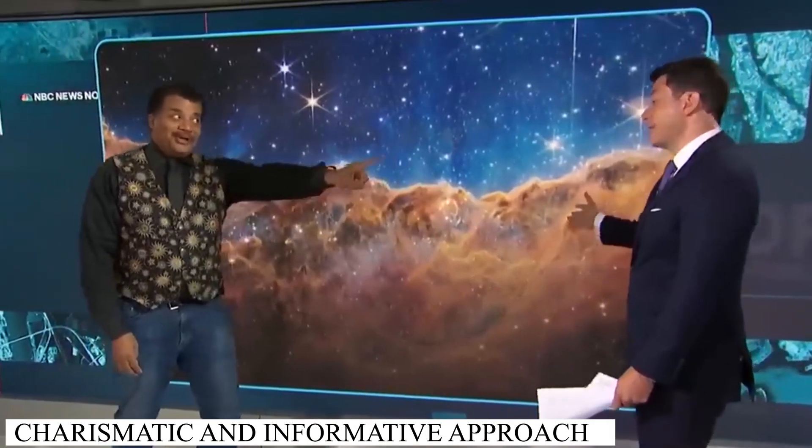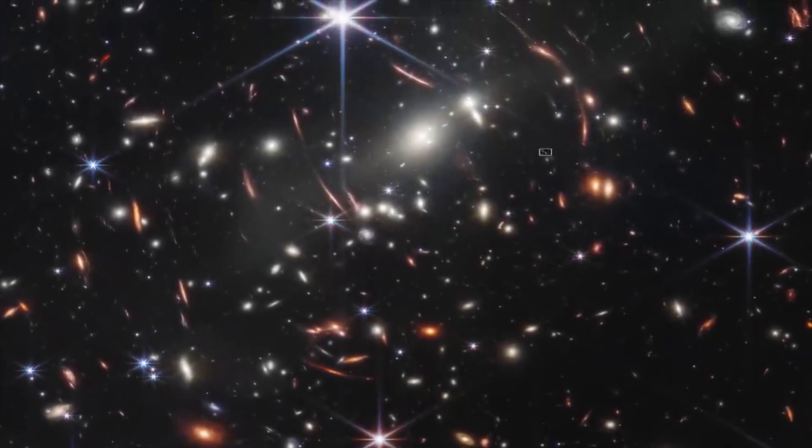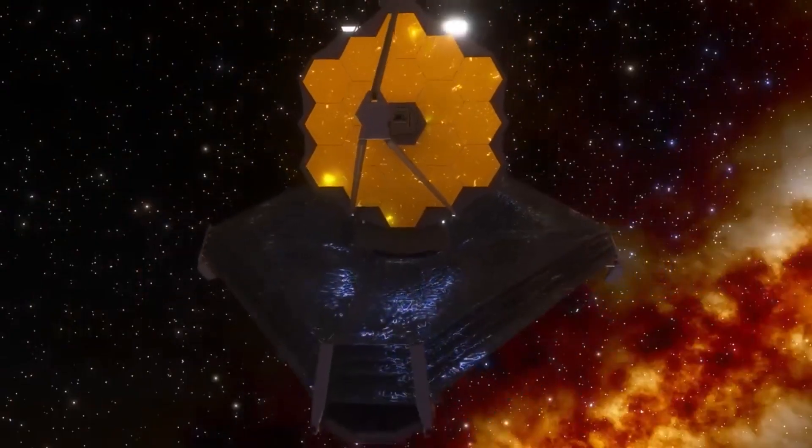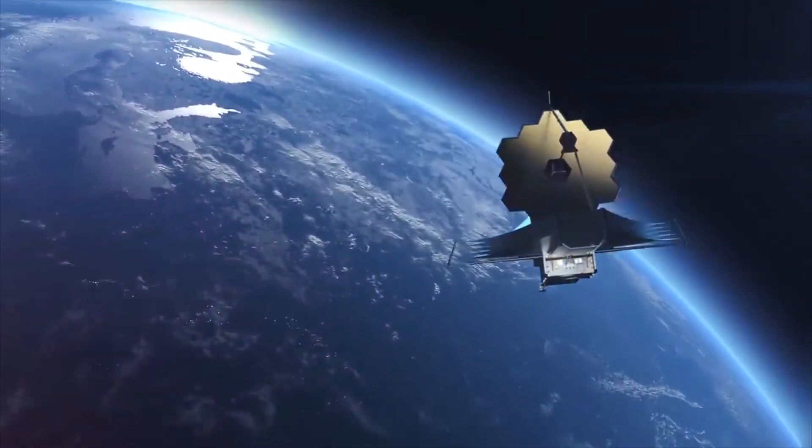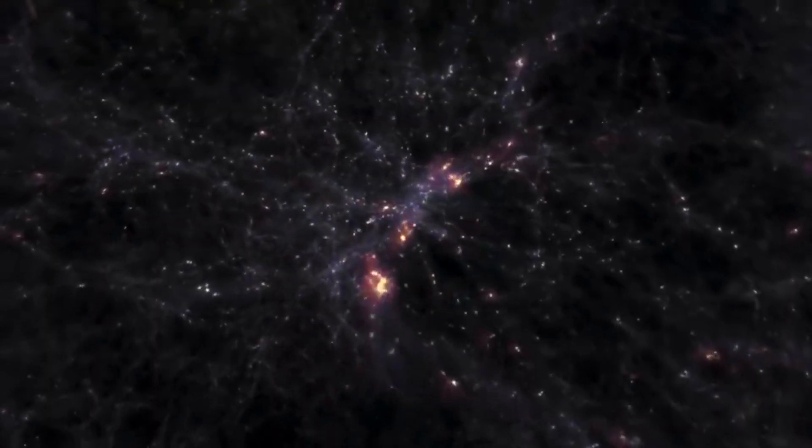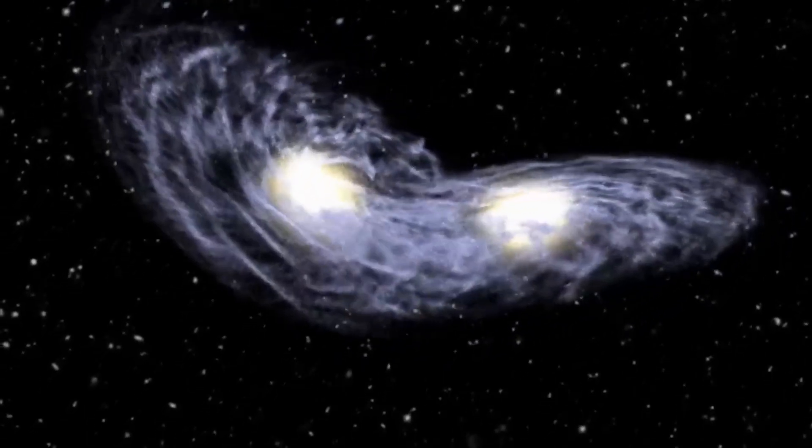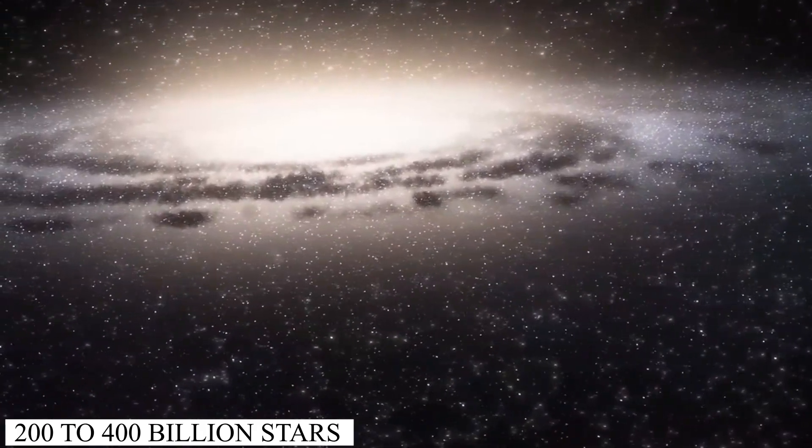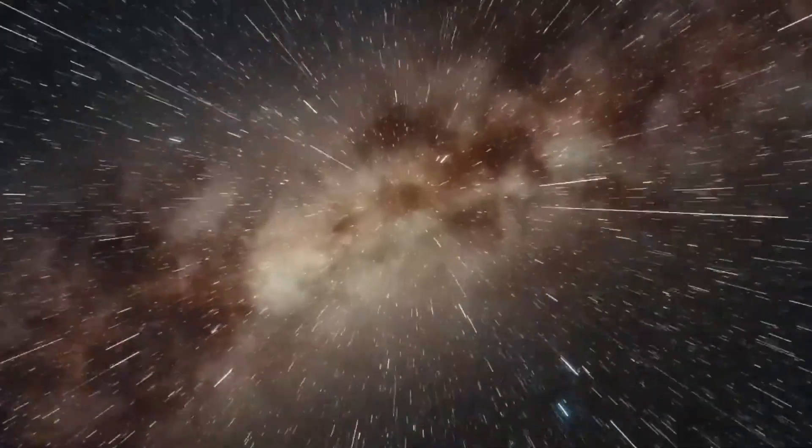In a recent interview, Neil deGrasse Tyson, known for his charismatic and informative approach to science communication, disclosed an astounding discovery made by the James Webb Space Telescope. Over the course of several months, the telescope's observations indicated that an astronomical number of stars had vanished into thin air. To put it in perspective, our very own Milky Way galaxy boasts an estimated 200 to 400 billion stars. So the disappearance of 900 trillion stars represents an immense loss on a galactic scale.